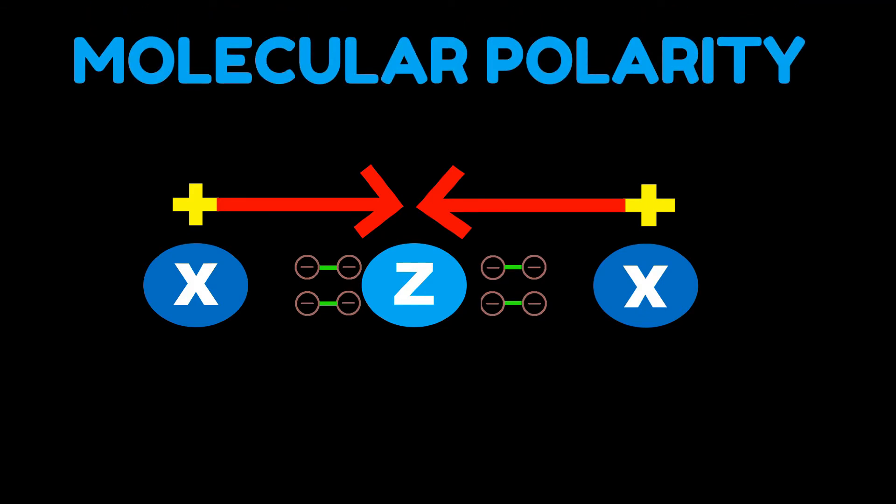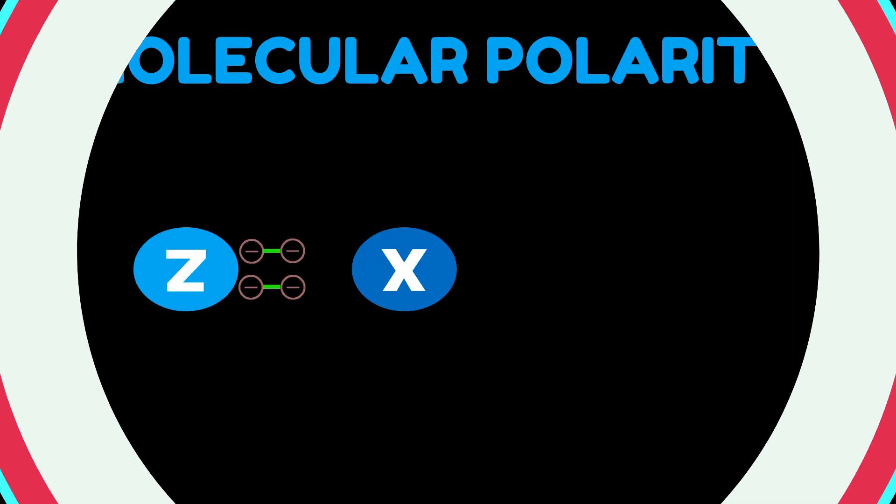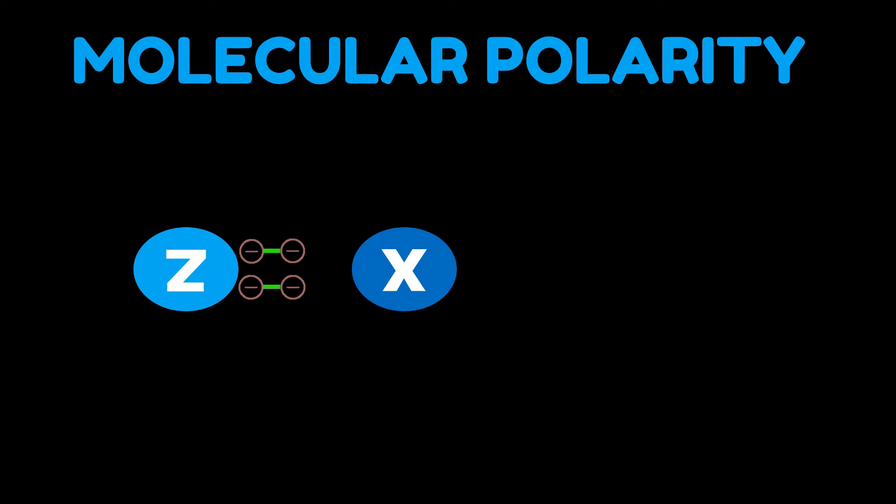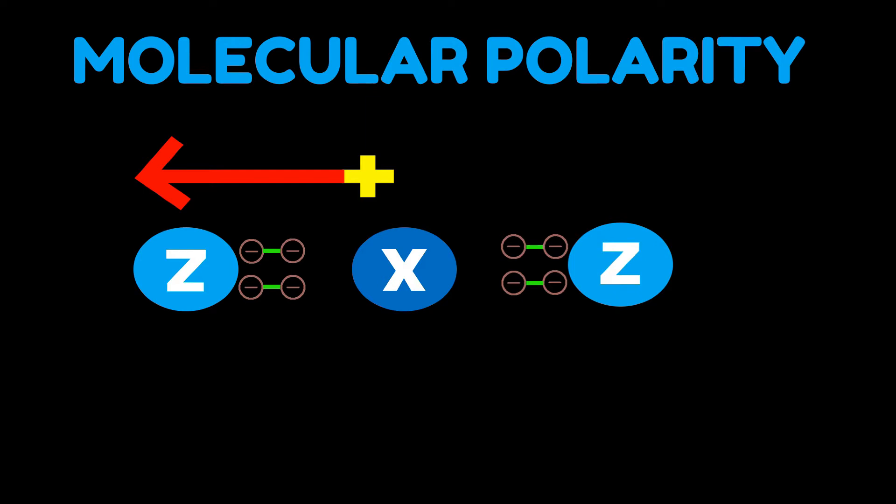We have two types of molecular polarity. When the arrow cancels out, this is what we call the first type, the non-polar. Let's try having these atoms bonded having a bond polarity towards the left. If we were to bond another Z atom to the X atom, what is this molecule's molecular polarity? Yes, it's still non-polar.